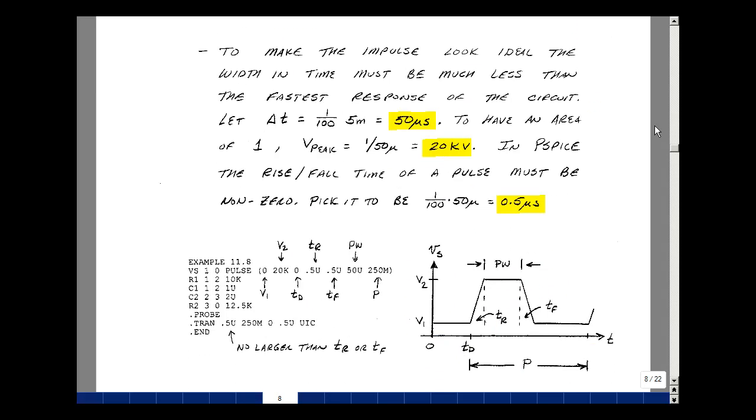Now there is no impulse function in SPICE or PSPICE. To make the impulse look ideal, the width and time we must pick must be much less than the fastest response of the circuit. Our fastest response was a 5 millisecond time constant, so let's pick our pulse time to be much less, say one one-hundredth, which would be 50 microseconds. We have to have an area of 1 for the unit impulse, so we'll pick the peak to be 1 over 50 microseconds, or 20,000 volts. PSPICE does not have a rise and fall time of 0, so we'll make it one one-hundredth times smaller at 0.5 microseconds.